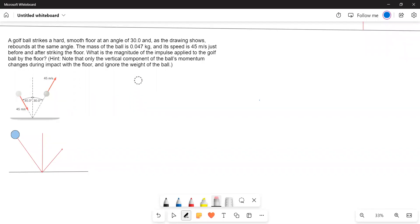This problem is based on the momentum-impulse theorem. A golf ball strikes a hard smooth floor at an angle of 30 degrees and, as the drawing shows, rebounds at the same angle.